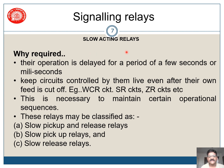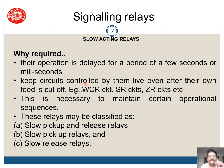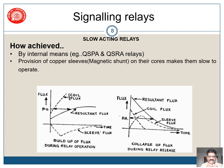Now let us talk about slow acting relays. These relays are required in railway signaling on various occasions where their operation is delayed for a period of a few seconds or milliseconds. This is required to keep track circuits controlled by them live even after their own feed is cut off. If the feed of the track relay is cut off because of any circuit obligation, the track relay should remain in the picked-up condition for a small duration so that the circuit remains complete. We use these in SR circuits, ZR circuits, and even WCR circuits. These relays may be classified as slow to pick up and slow to release relays.